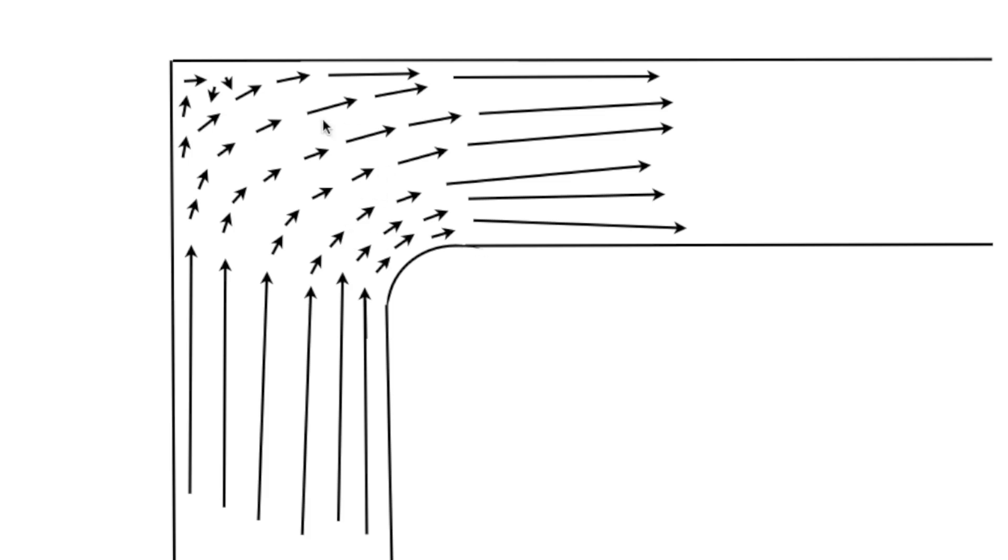This elbow is going to move more air and have less loss in both static and velocity pressure than the other one. So why is it doing that?